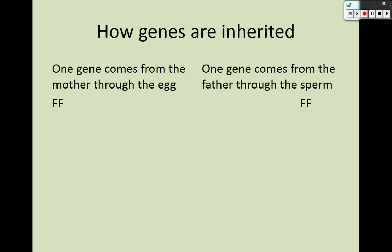In the case where both parents are homozygous dominant, the child would be homozygous dominant. The same goes if both parents are homozygous recessive — the child is going to be homozygous recessive. But where it starts to get interesting is when the parents have different genotypes, or when one of those genotypes is heterozygous.